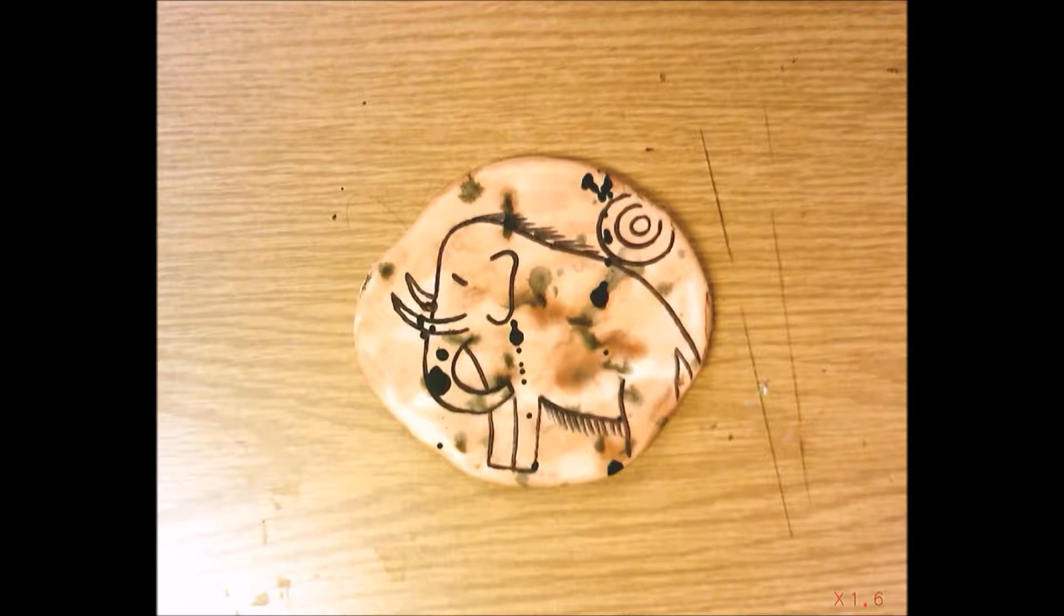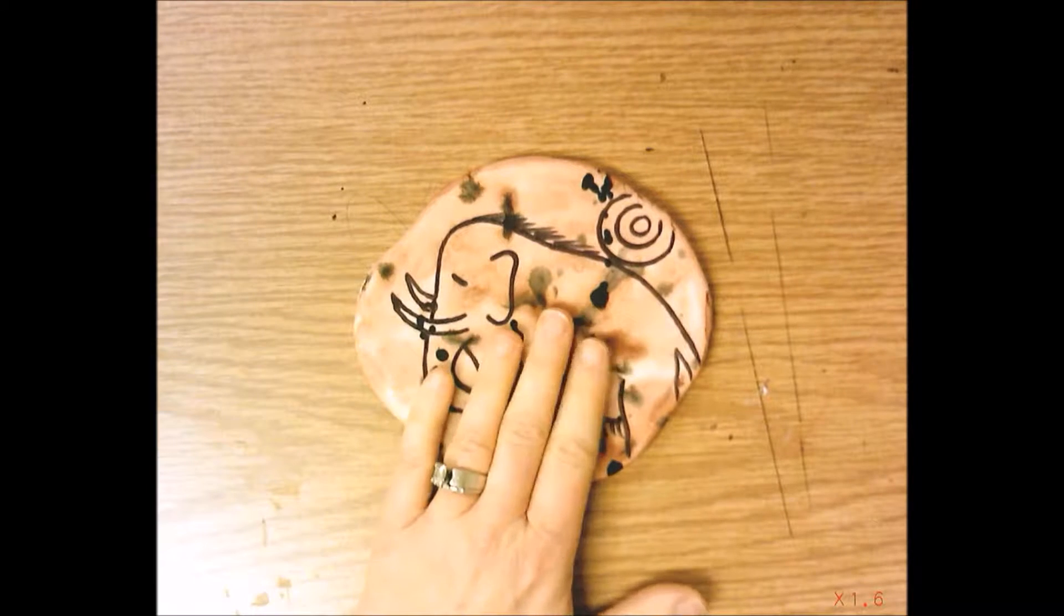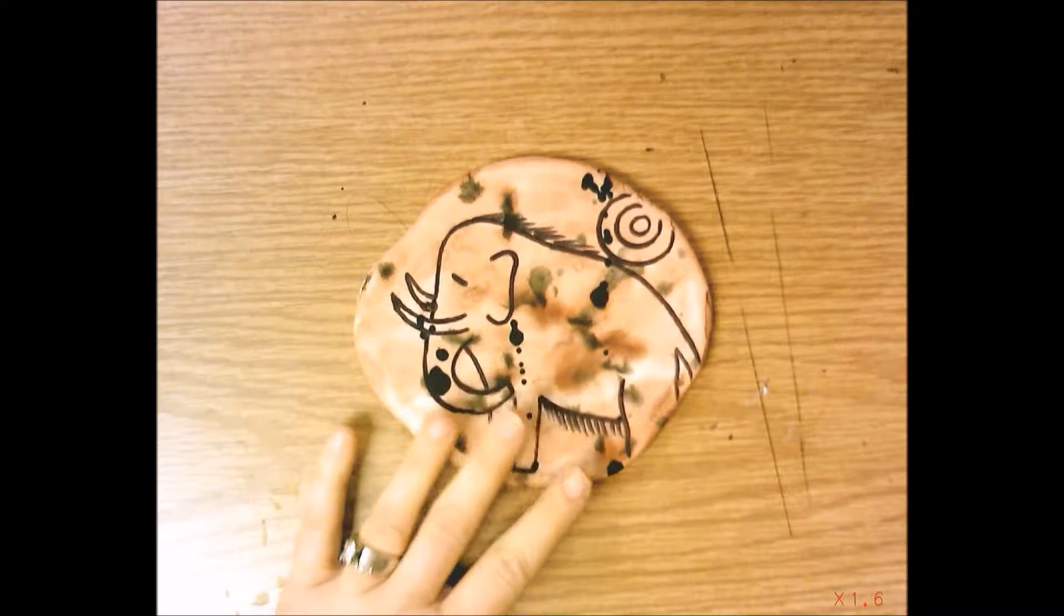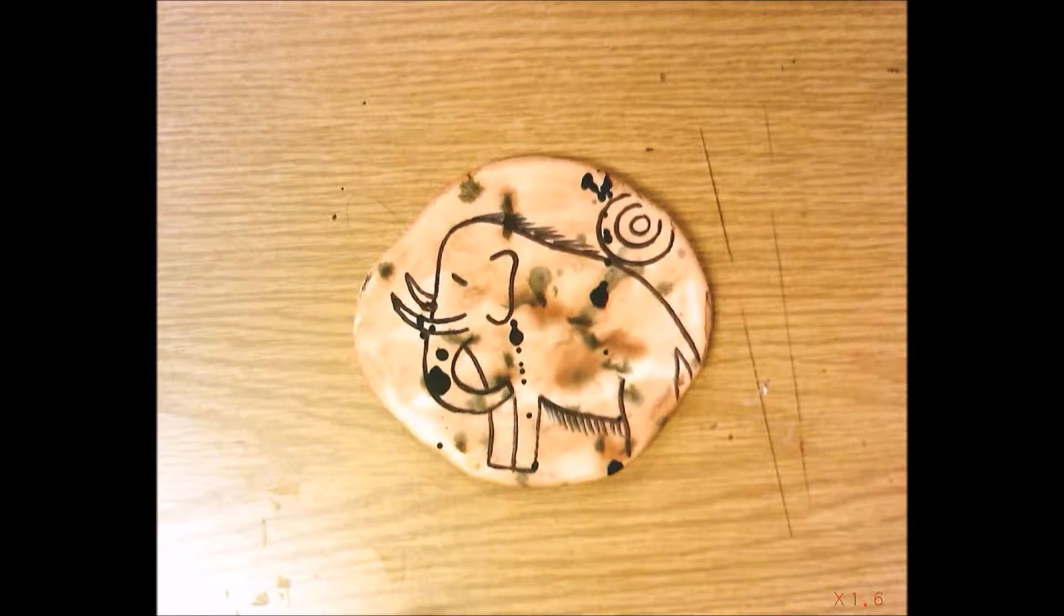Hello first grade, today we are going to start some cave art and this is what it's going to look like when it's finished. Our learning objectives for this assignment are to understand people from different places and times have made art for a variety of reasons. We will be able to create art for the purpose of recording history and we'll be able to use materials and tools safely and properly. We read the story 'The First Drawing' by Mordecai Gerstein.